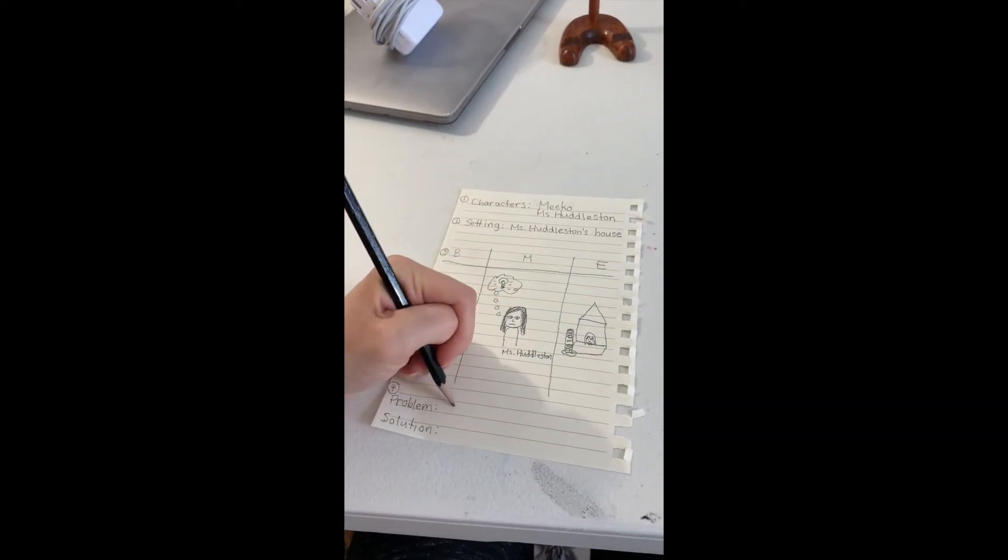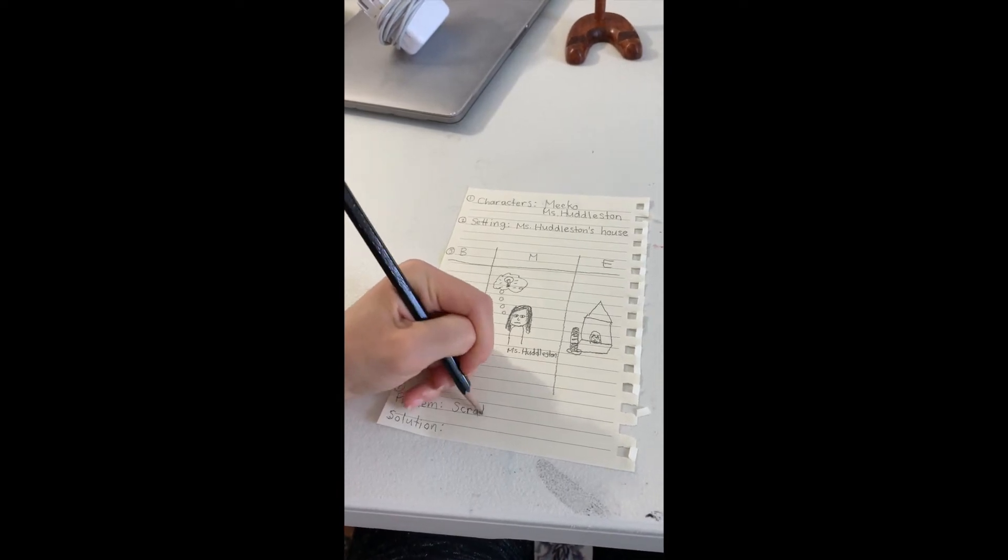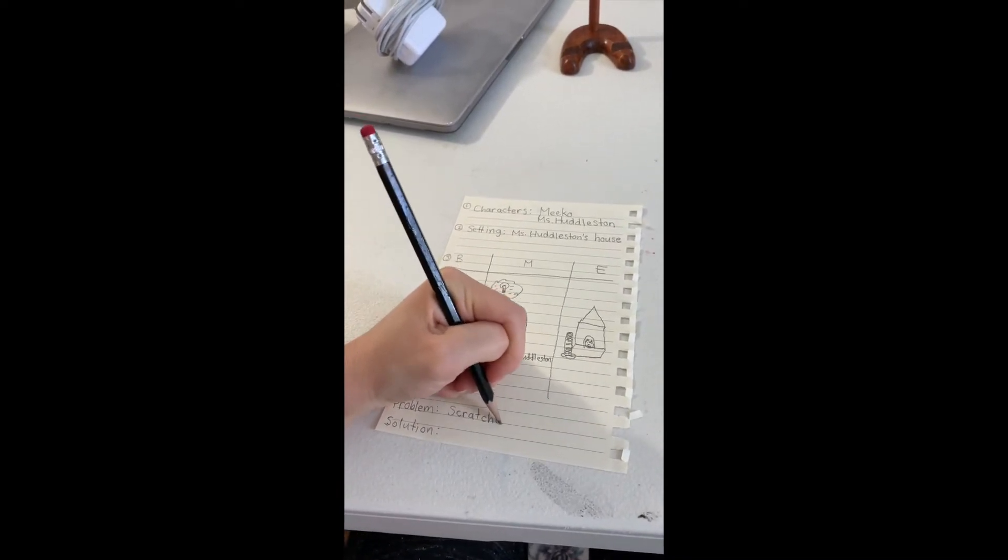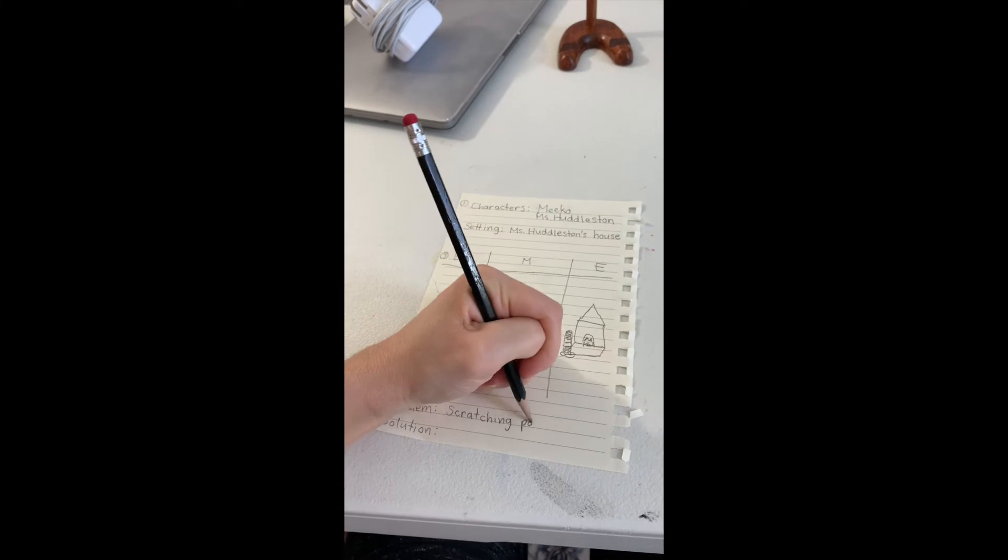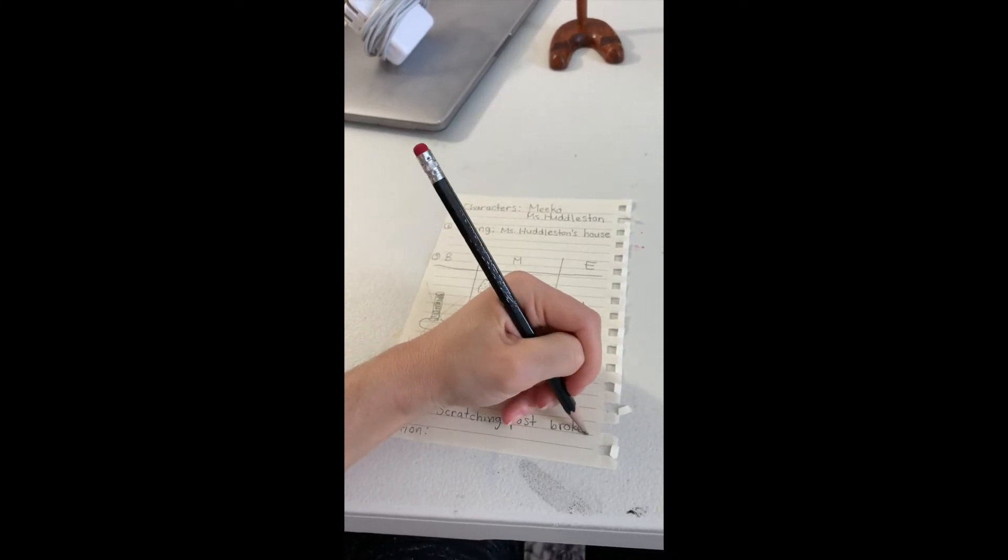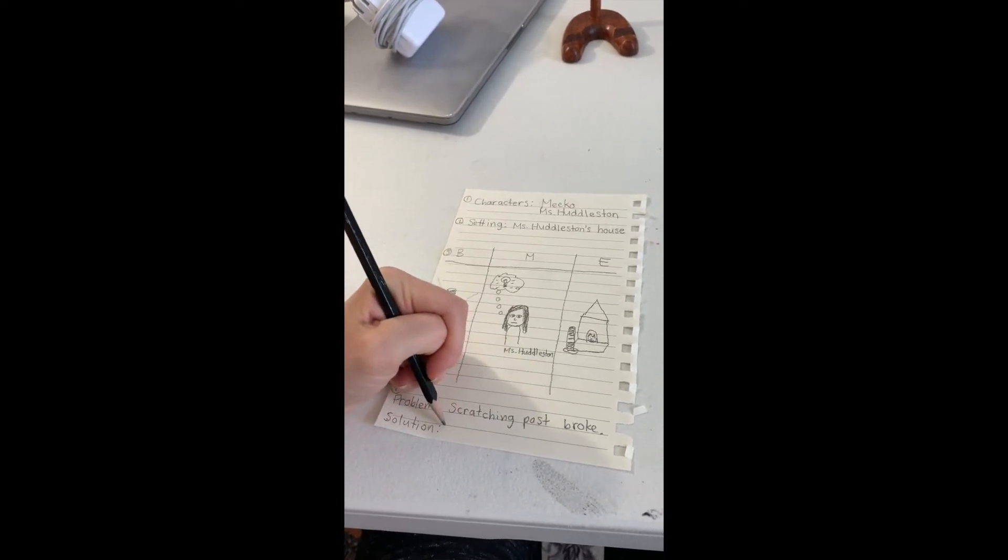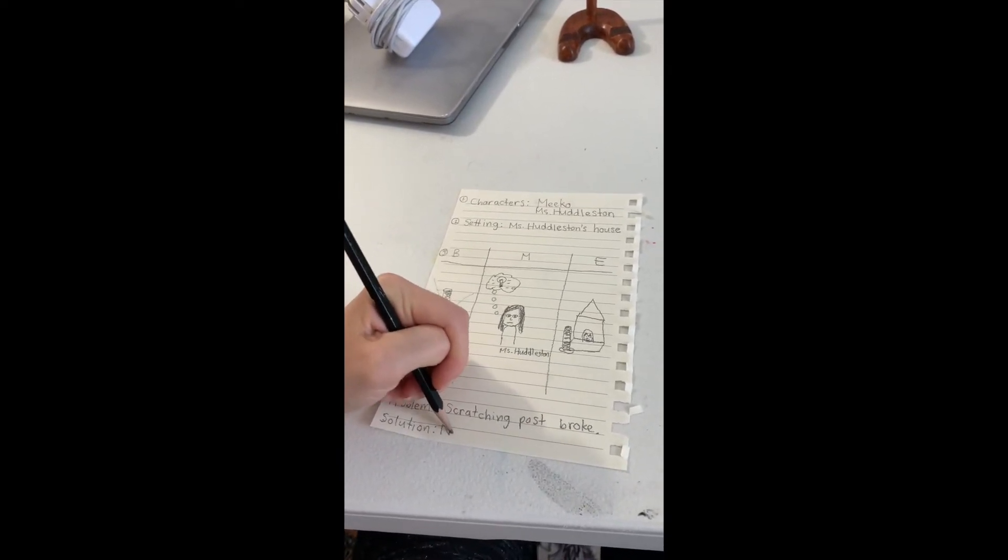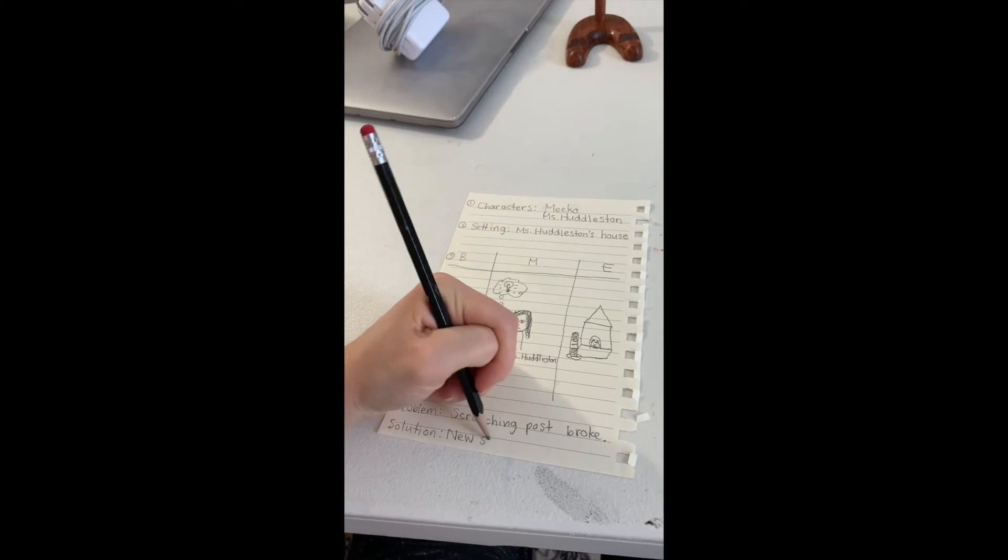Lastly, I'm going to write out my problem and solution. My problem is that Miko's scratching post is broken. Oh, no. My solution was that Miss Huddleston bought him a new scratching post.